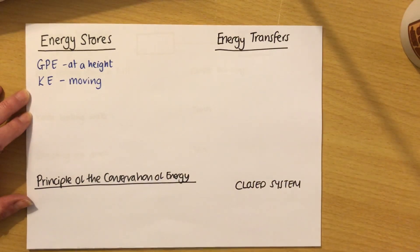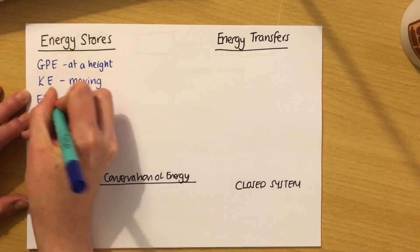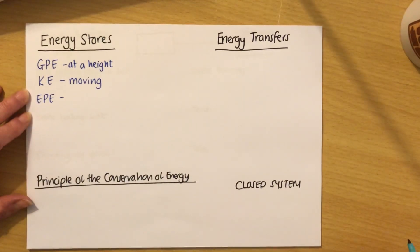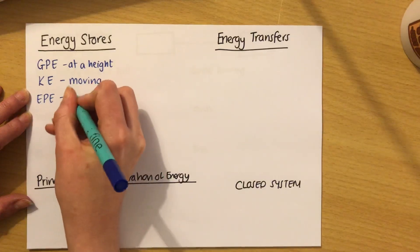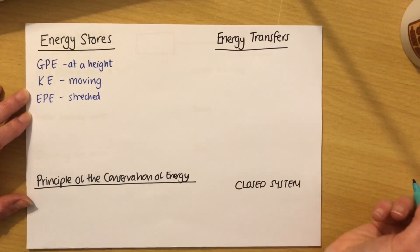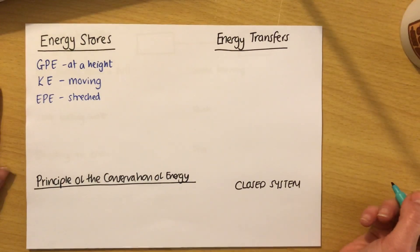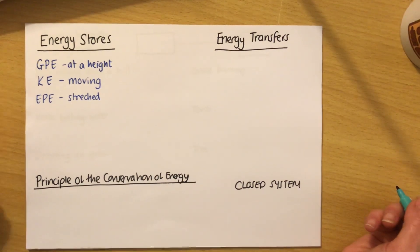The third one that has initials is EPE, which is elastic potential energy. That's when something is stretched or compressed, and it's sometimes known as strain energy. So imagine if you have an elastic band and you stretch it, you've given it elastic potential energy.